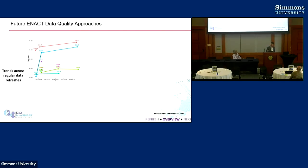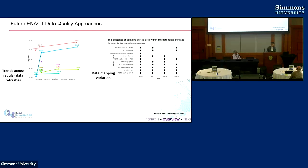This shows some ideas of other things we plan to do with data quality — trends across refreshes. These are simply the overall number of facts in the data as sites refresh. You'd expect as you refresh your data that there would be more data than before, or the same amount, but not less — and that's pretty much what's happening here, so we're not seeing any obvious quality problems. We're also highlighting the number of domains that are populated at different sites. For example, site C doesn't have any ICD-10 procedures. We asked that site, and they don't actually put that in their I2B2 — not a quality error, but something worth discussing with that site.